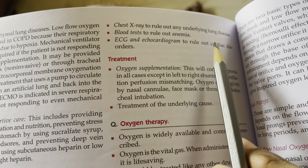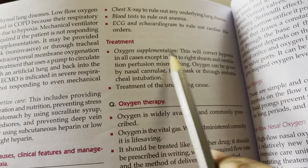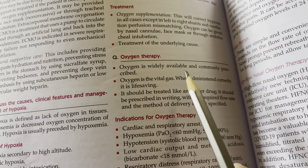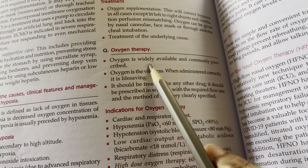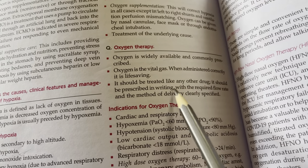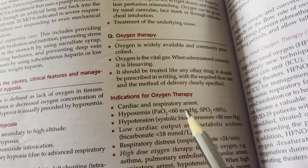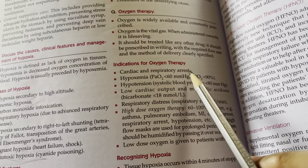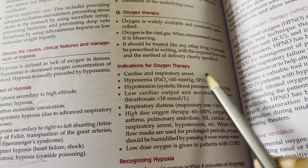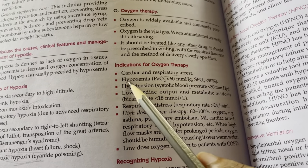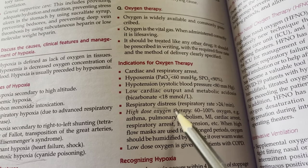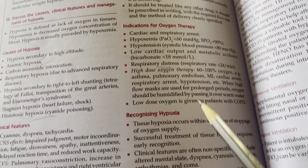Investigations: pulse oximetry, ABG, chest X-ray to rule out underlying lung disease. Treatment: oxygen supplementation and treating the underlying cause. Indications for oxygen therapy include cardiac and respiratory arrest, hypoxemia, hypotension, and respiratory distress.